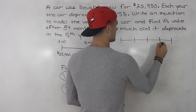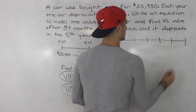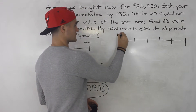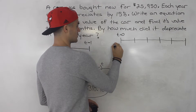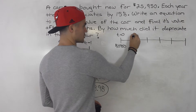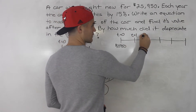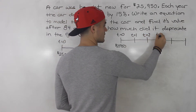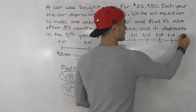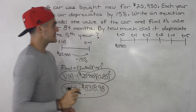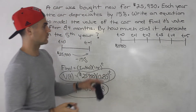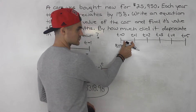On the timeline, this is when we purchase the car at t = 0, for $25,950. It depreciates 15% every year, so we have t = 1, 2, 3, 4, and 5. They're asking how much the car depreciated in the fifth year — that is the period from t = 4 to t = 5.